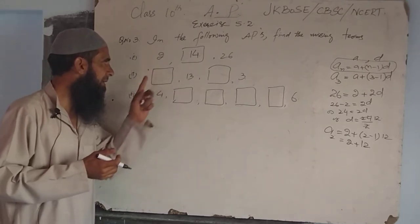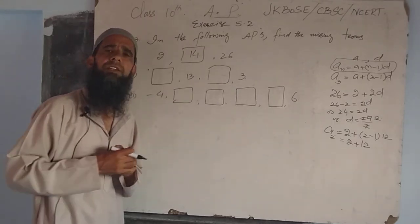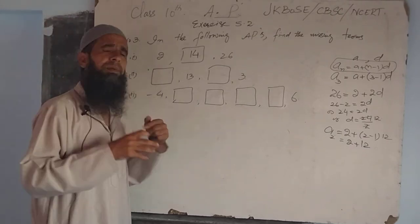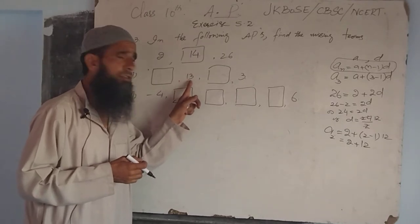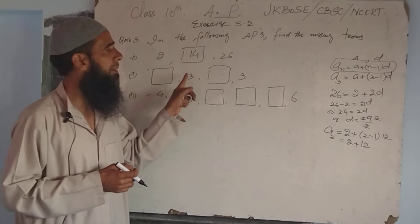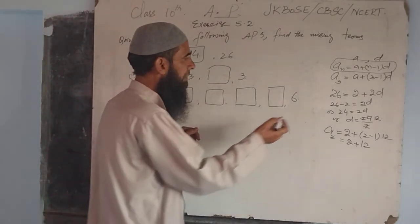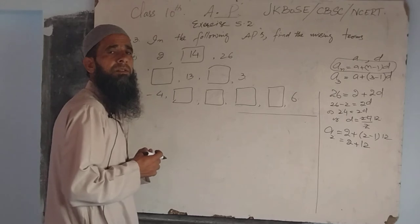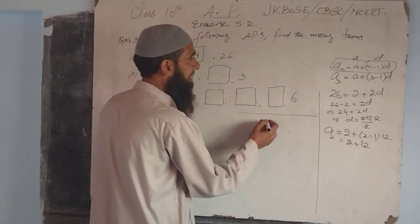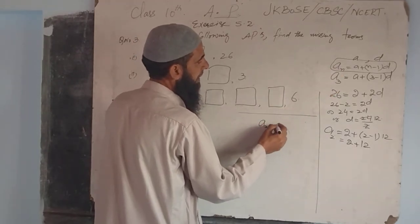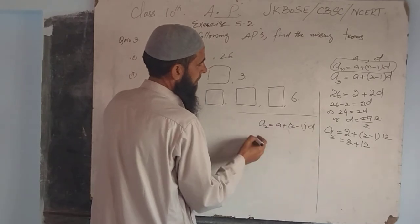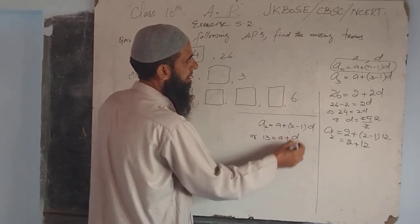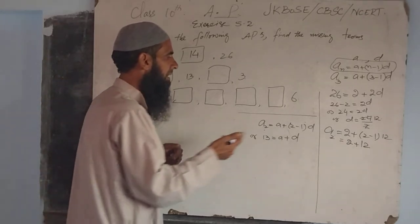Now we discuss the second part. Here the first term is not available, the second term is available, the third term is not available, but the fourth term is available. We use the two given terms. For the second term, if N=2: A2 = A + (2-1)D = A + D. Since A2 is 13: A + D = 13. This gives us one equation.